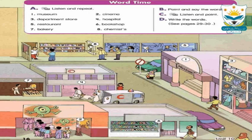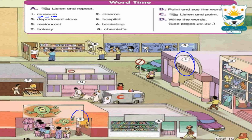See with me the words of unit 10. Repeat after me: Museum — museum means متحف. This is a museum. Spelling: M-U-S-E-U-M. Number two: cinema — cinema means السينما. Spelling: C-I-N-E-M-A.